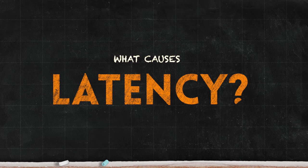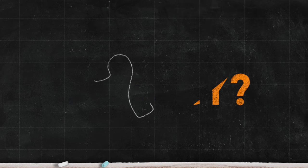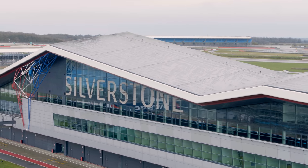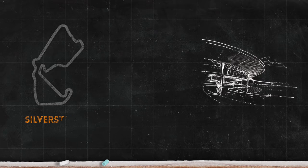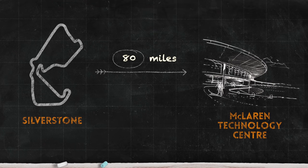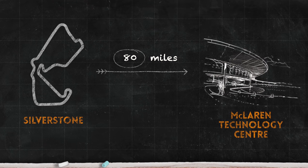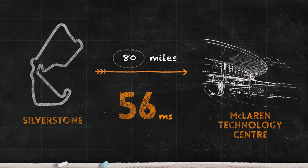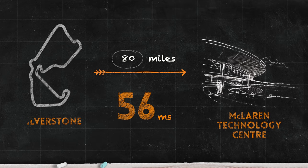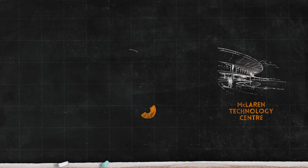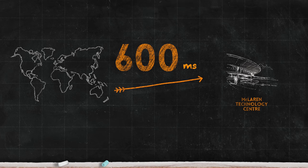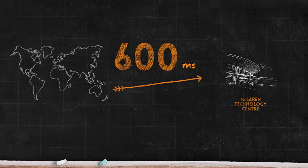So what causes latency? The key determinator is distance. A track such as Silverstone, which is relatively close to MTC — about 80 miles away — the latency to move data from the F1 car to the base is around 56 milliseconds. If you compare that to Melbourne in Australia, the other side of the world, it takes around 600 milliseconds — almost 10 times slower.